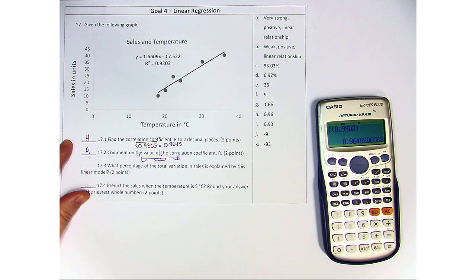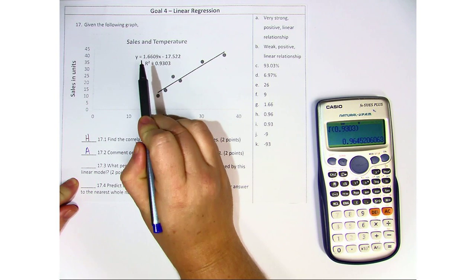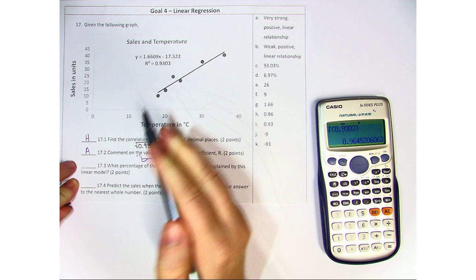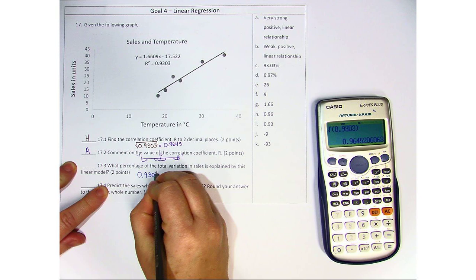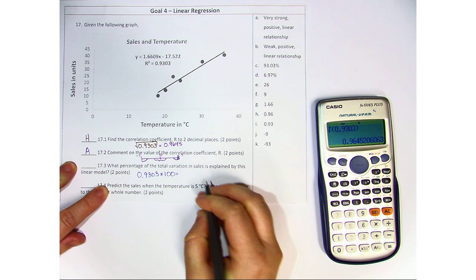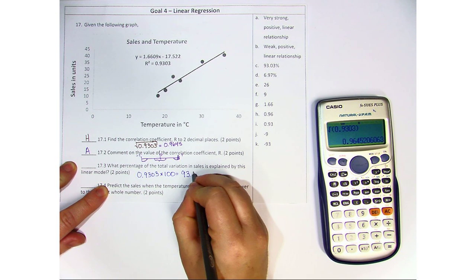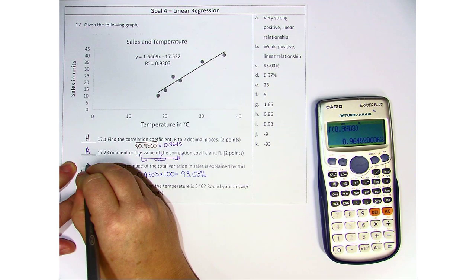What percentage of the total variation in sales is explained by this model? Now this is where we get the R squared. This is the coefficient of determination. All we have to do is take the 0.9303 and multiply it by 100 to make a percent. And we get 93.03 percent. And we see that here with C.